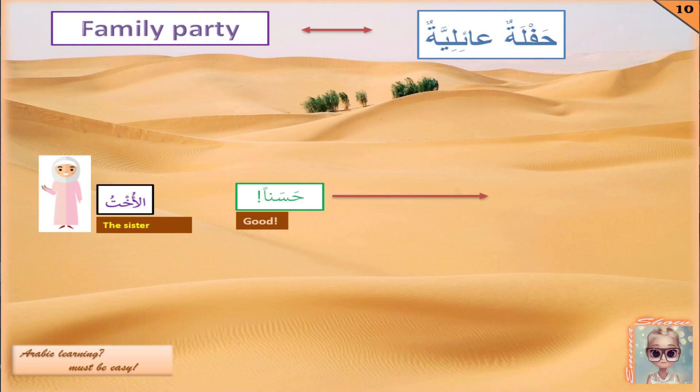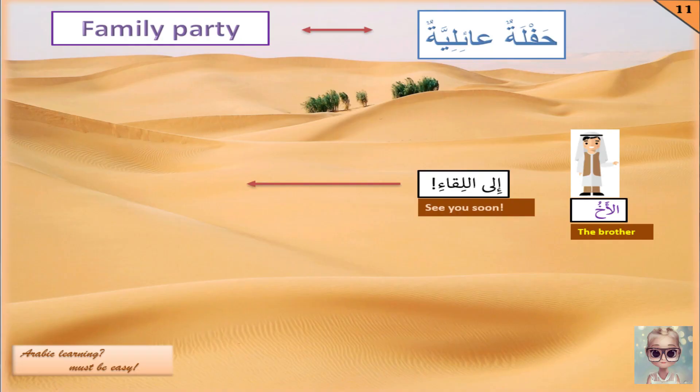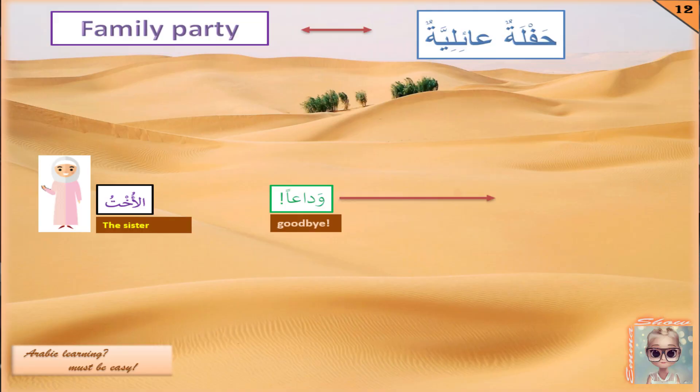The sister says حسنا, meaning 'yes', 'okay', or 'good'. At the end the brother says إلى اللقاء, meaning 'goodbye', and the sister answers with وداعاً, also meaning 'goodbye'. The word وداع means 'farewell', so الوداع literally means 'the farewell', but it is usually used as 'goodbye' or farewell for something.